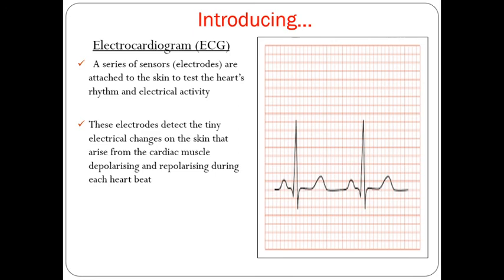The electrodes detect tiny electrical changes on the skin that arise from cardiac muscle — the terms are depolarizing and repolarizing, which we'll cover in more detail when we look at nerve fibres. Cardiac tissue can propagate electrical impulses like a nerve fibre. When the wave of excitation spreads over the cardiac cells, the charge inside and outside their membranes changes: it depolarizes — becomes more positive — and repolarizes — becomes more negative — during each heartbeat. Either way, it's electrical activity you can measure.